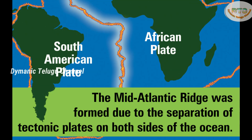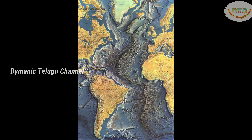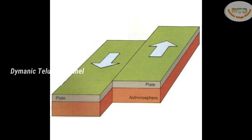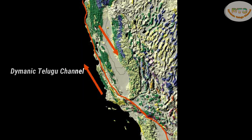The sea divergence example is the Mid-Atlantic Ridge. It is the longest mountain range, created by mantle and magma rising, forming the ocean floor.